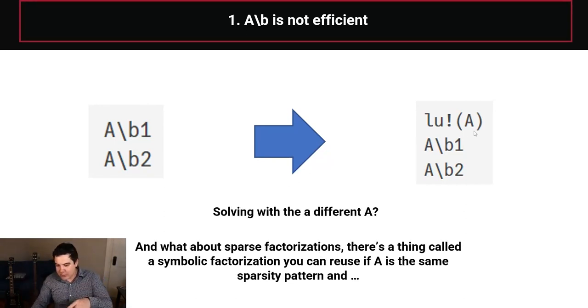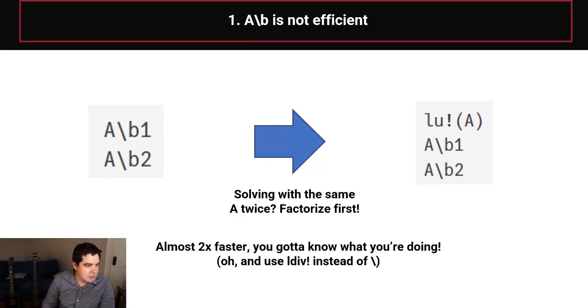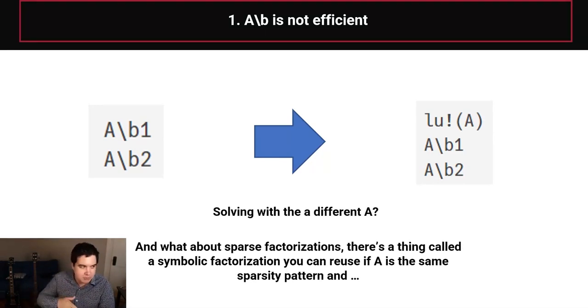there's also something called the symbolic factorization. And if you change A, you might need to do a new factorization, but you don't need to do a new symbolic factorization if the sparsity pattern is the same. And okay, I can rant on this forever. So just using A backslash B is usually not the most efficient thing to do. There's a lot of other details that you actually need to know about if you want to make this as efficient as possible. And backslash does not let you have all those options.